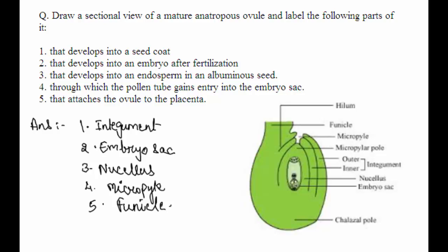Now, the part that develops into a seed coat — what develops into a seed coat? That is the integument. So these are the integuments: the outer integument and the inner integument. These integuments develop into a seed coat.